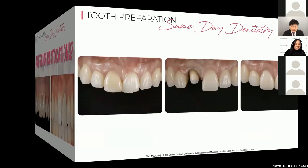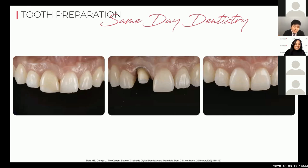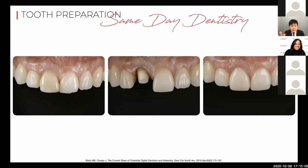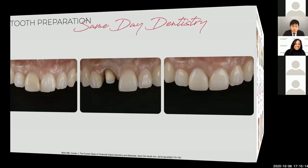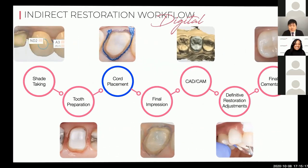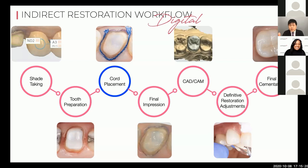That doesn't mean all anterior restorations must go to the lab. In a case by Blatz and Conejo with tooth number eight, the adjacent teeth had quite monochromatic and uniform shade without staining or white spots, so they were able to match the color well with same-day chairside dentistry. You can use the chairside milling workflow for anterior cases, but you just need to pick your cases correctly.